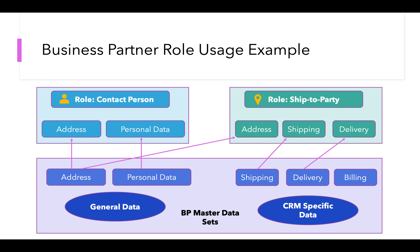When we add the role of contact person to a business partner, we can only display the address and personal data — the CRM-specific data is not required. When the same business partner is given the role of ship-to party, we will need to add shipping and delivery details as well, along with the address. This is a perfect example of how business partner roles can reuse master data sets for the same business partner to create different views.